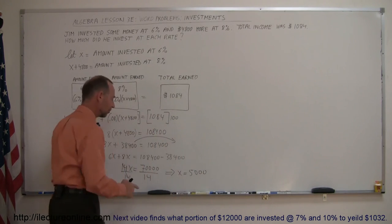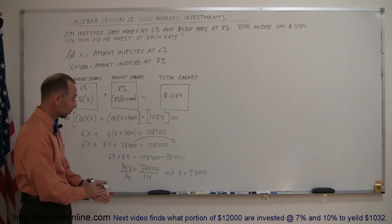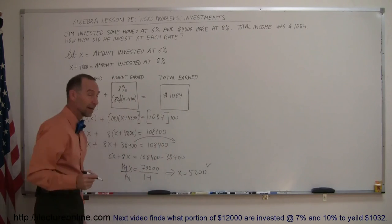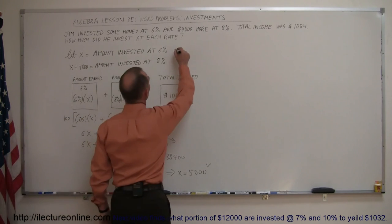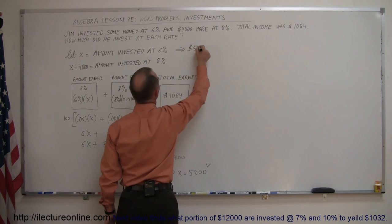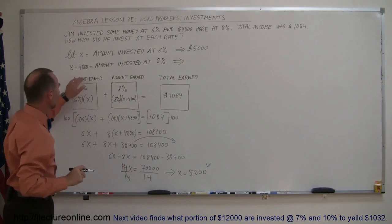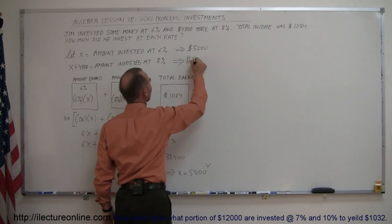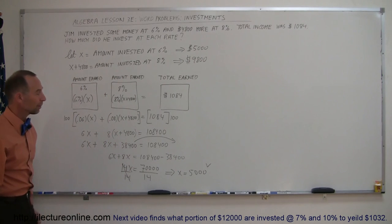Because 5000 times 10 is 50,000, and 5000 times 4 is 20,000. 50,000 plus 20,000 is 70,000. So that looks like it's correct. Now, going back to our definitions. X was the amount invested at 6%. That means we invested $5,000 at 6% and $4,800 more. That makes that $9,800 invested at 8%. That's how you do a problem like that.